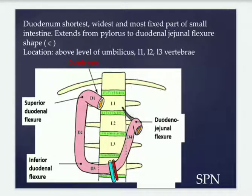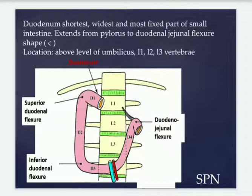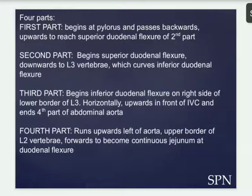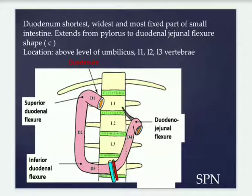If you are interested, you can write the surface marking. In the duodenum there are four parts: D1, D2, D3, D4. D1 is at the right lateral vertical plane marking the pylorus. D2 is at the median plane. D3 is at the transpyloric plane. D4 is at the subcostal plane. These are your surface markings — observe the picture, its locations, and where it comes down and comes up.